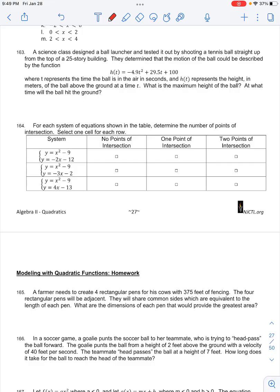Number 163 in your classwork for quadratic functions asks: a science class designed a ball launcher and tested it out by shooting a tennis ball straight up from the top of a 25-story building. So these students are on top of a building, they have an initial height of 100 feet, and they launch a ball from this height upwards and this ball comes back down, travels downwards.